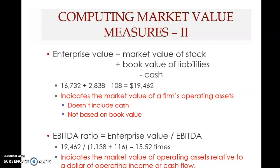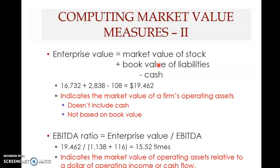The market value of the company's operating assets is also known as enterprise value. To compute enterprise value, you take the market value of equity — market price per share multiplied by number of shares outstanding — plus the book value of liabilities. Book value is used for liabilities because the difference from market value is negligible.